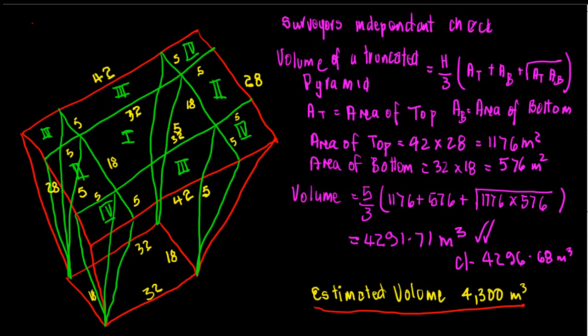So just looking at this here, the area of the top, AT, is 42 by 28, which is 1,176 meters squared, because that's an area. And the area of the bottom is 32 by 18, which comes out at 576 meters squared. So putting all that into our formula, we get our height, which is 5 over 3.